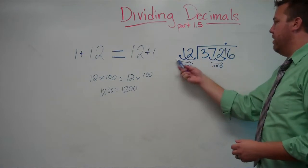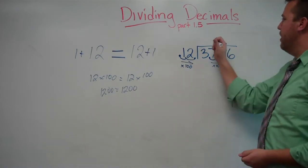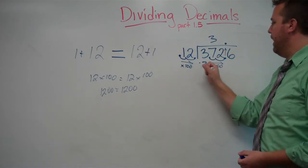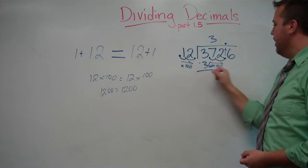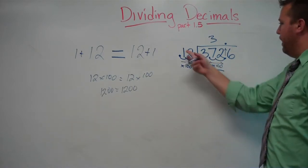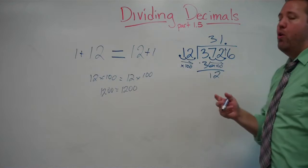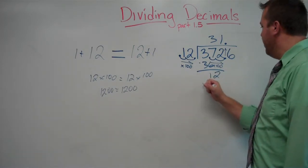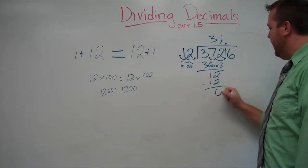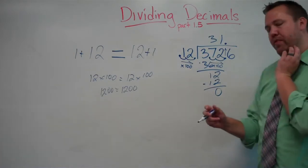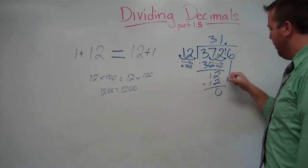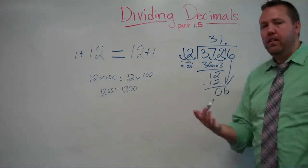12 goes into 3, 0 times. 12 goes into 37, 3 times. Multiply that, that's 36. Okay, I'm subtract and we get 12. 12 goes into 12 one time. Okay, subtract and gets 0. Now, we bring that down.